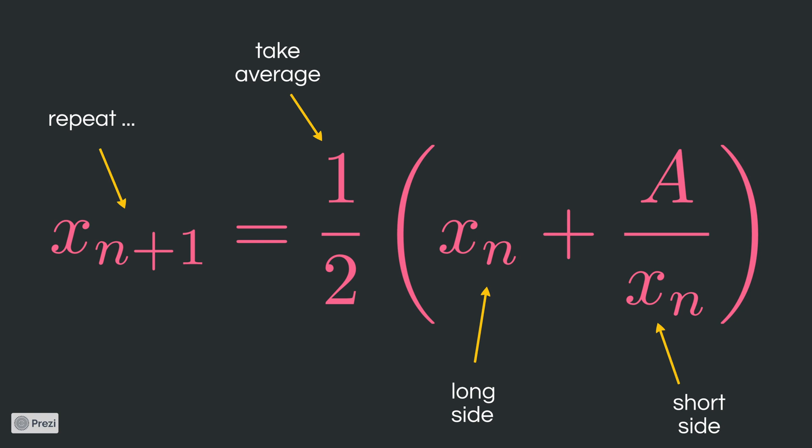Instead of observing a rectangle getting shorter, we formulate it now rigorously with that formula. The one halves is the averaging that we have seen before.